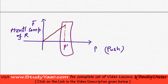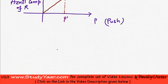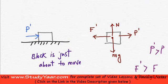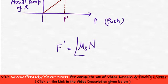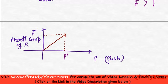At P equal to P', my force is given by a particular relation. That relation is F' is equal to μs into N. My normal component of the reaction we know is always equal to mg. So I could in a way say that F' is equal to μs into mg. This is my F' — the maximum frictional force at the point of impending motion.